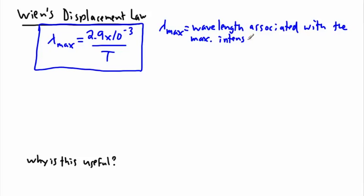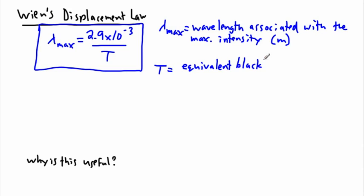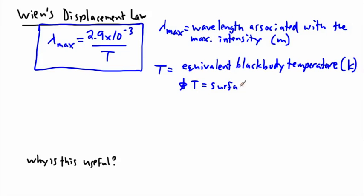Lambda max is going to be measured in meters, normally. And if we measure it in meters, then T is called the equivalent black body temperature — actually, we call it the surface temperature. That's measured in Kelvin. So with a star, for example, we would call it a surface temperature.